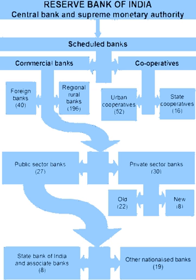The use of loan deeds continued into the Mughal era and were called destavez. Two types of loan deeds have been recorded. The destavez-e-indultalab was payable on demand and destavez-e-miadi was payable after a stipulated time. The use of payment orders by royal treasuries, called barates, have also been recorded. There are also records of Indian bankers issuing bills of exchange on foreign countries. The evolution of hundis, a type of credit instrument, also occurred during this period and remain in use.